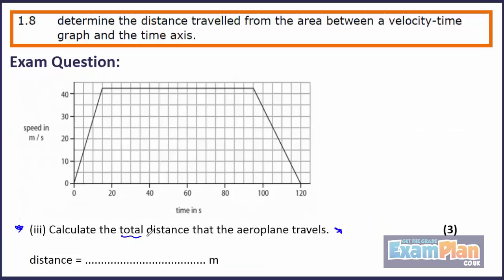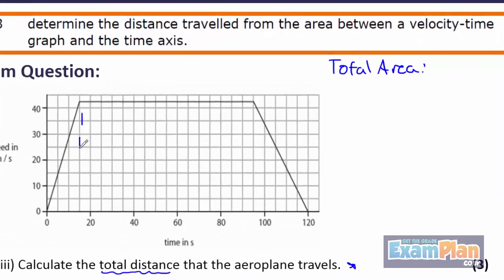Calculate the total distance the aeroplane travels. So here we are asked for the total distance, so we need the total area. So let's split the graph into sections A, B and C.